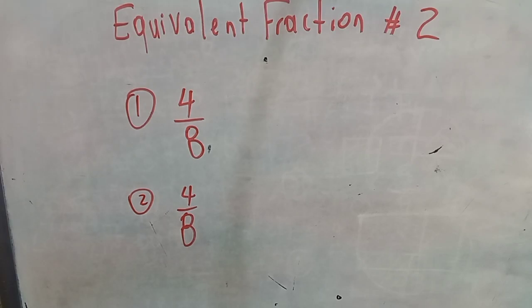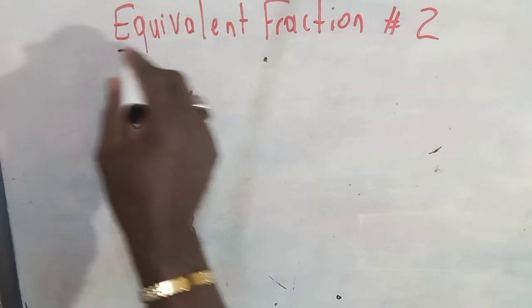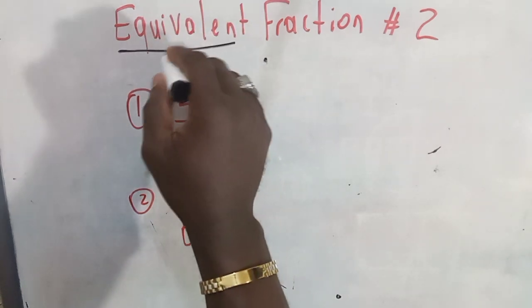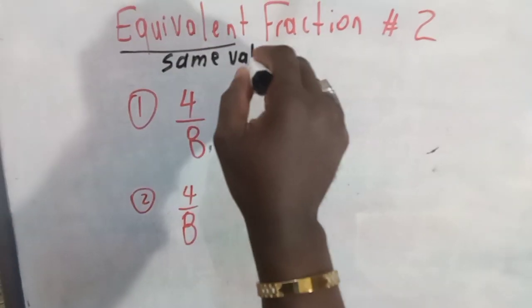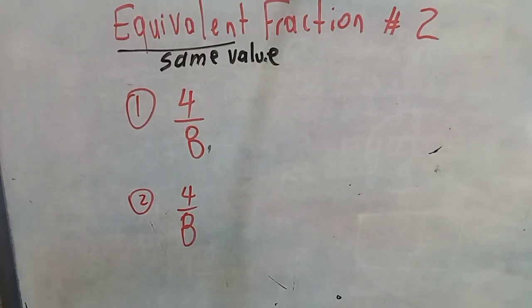When we say a fraction is equivalent, we're simply saying that the fraction has the same value though the terms are different. So when you see equivalent, it means the same value, but the terms are going to be different.